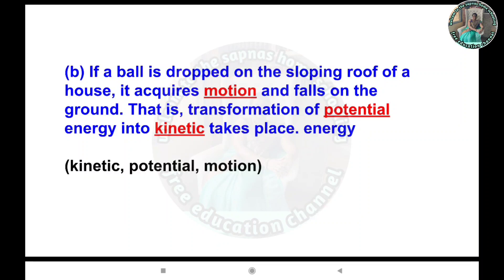Second: If a ball is dropped on the sloping roof of a house, it acquires motion and falls on the ground. That does transformation of potential energy into kinetic energy.